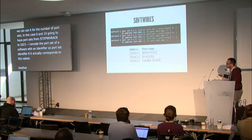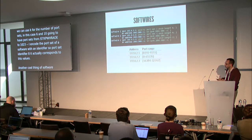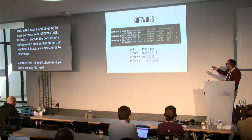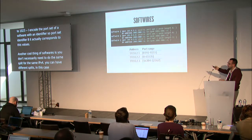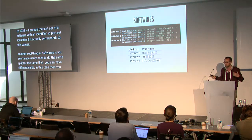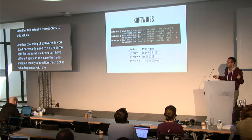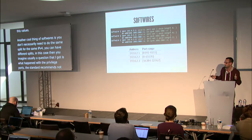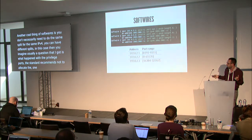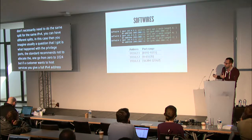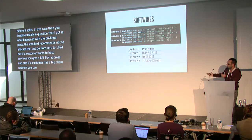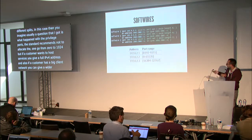Another useful feature of softwires is that you don't necessarily need to do the same port split for every IPv4 address — you can have different splits. A common question is what happens with privileged ports. The standard recommends not allocating ports 0 to 1024 to any customer. But if a customer wants to host services, you give them a full IPv4 address. And if a customer has a large client network, you can give them a wider port set, like 16,000 ports.